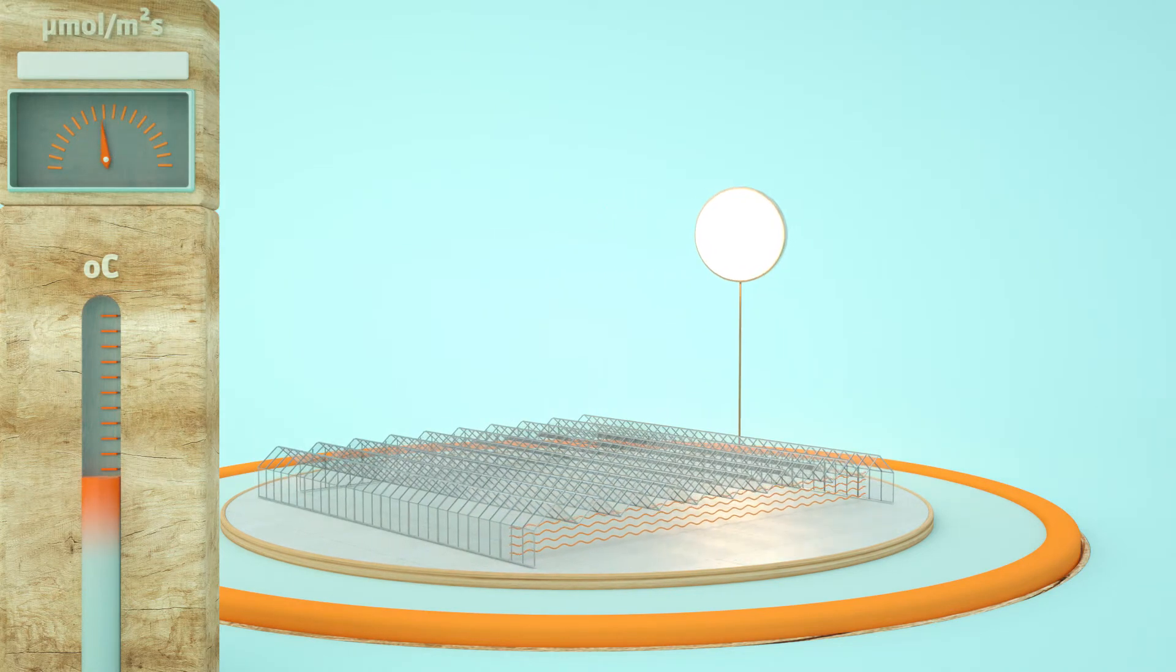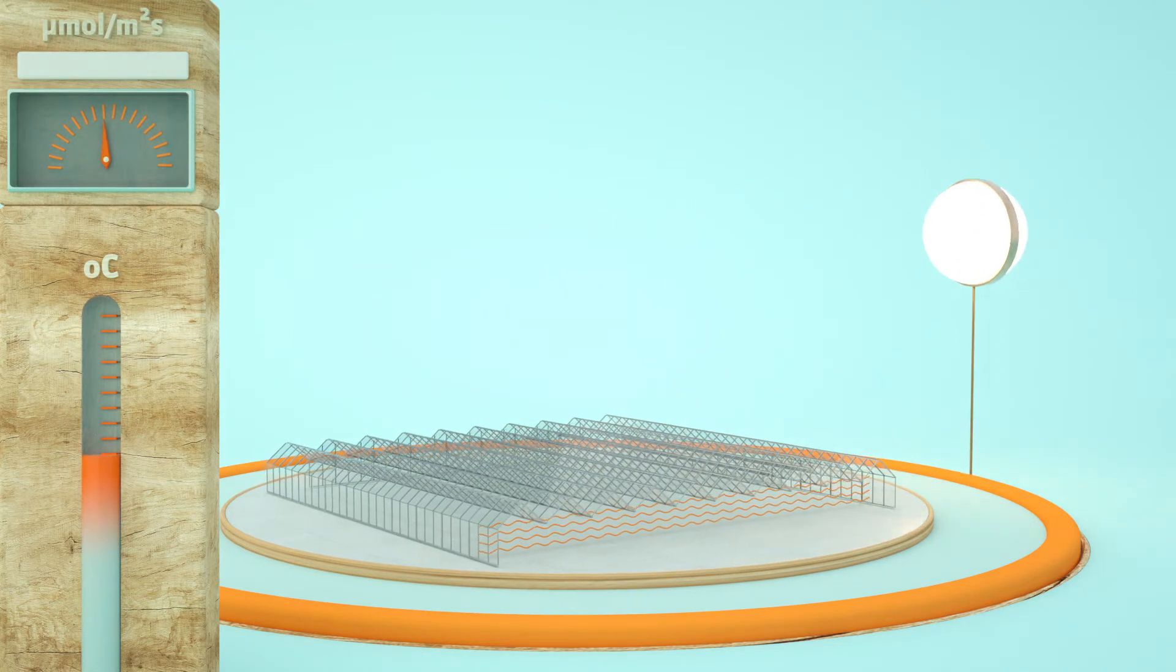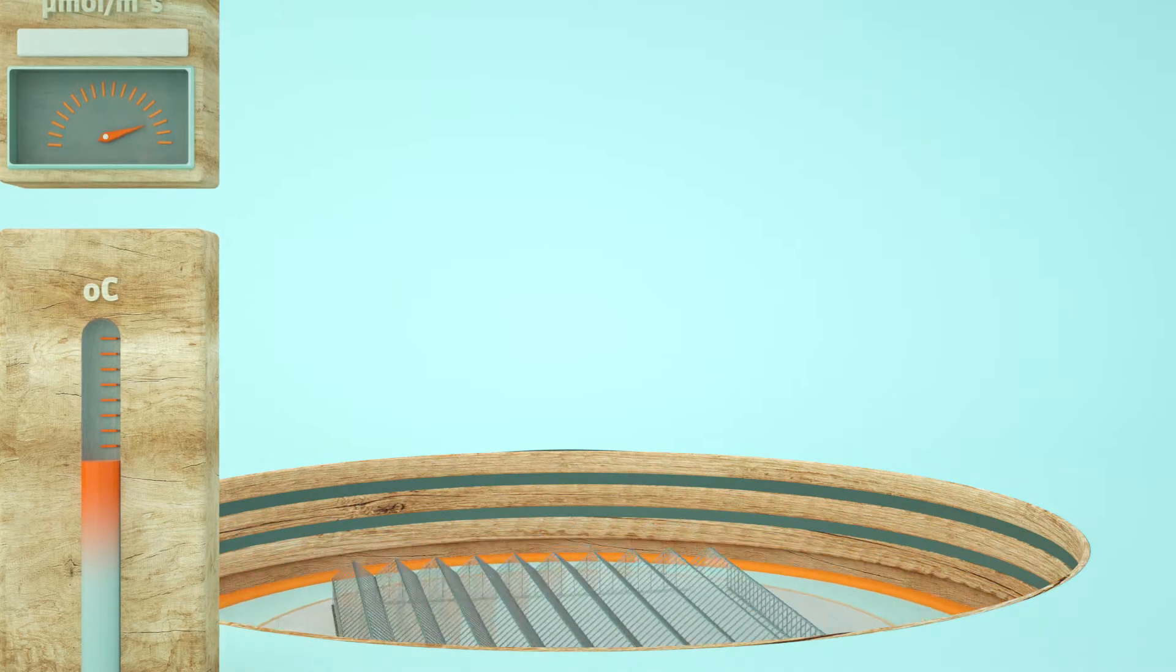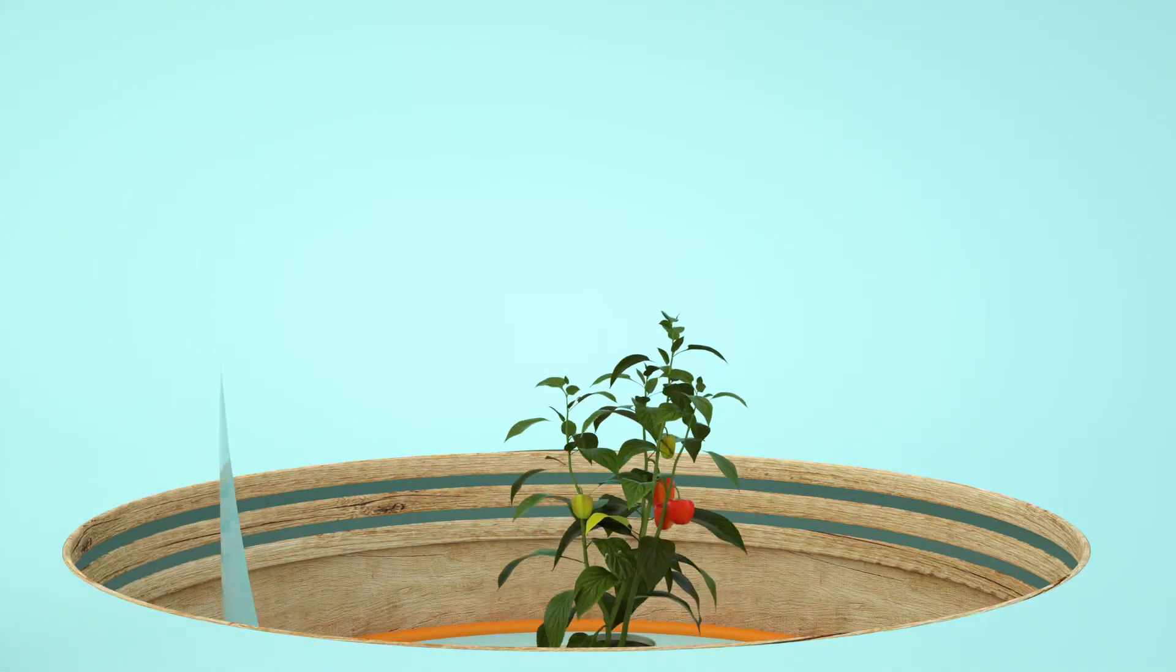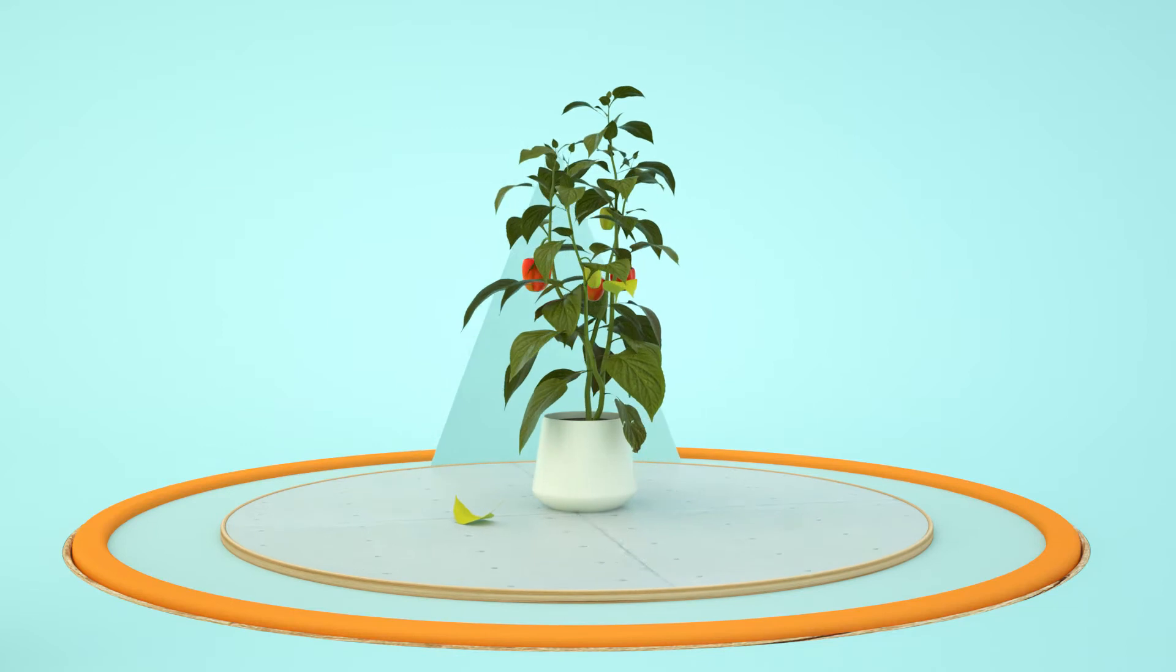As days get longer, light intensity increases and the temperature in the greenhouse rises. Plants and their fruits can burn, while other parts of the plant are in the shade.